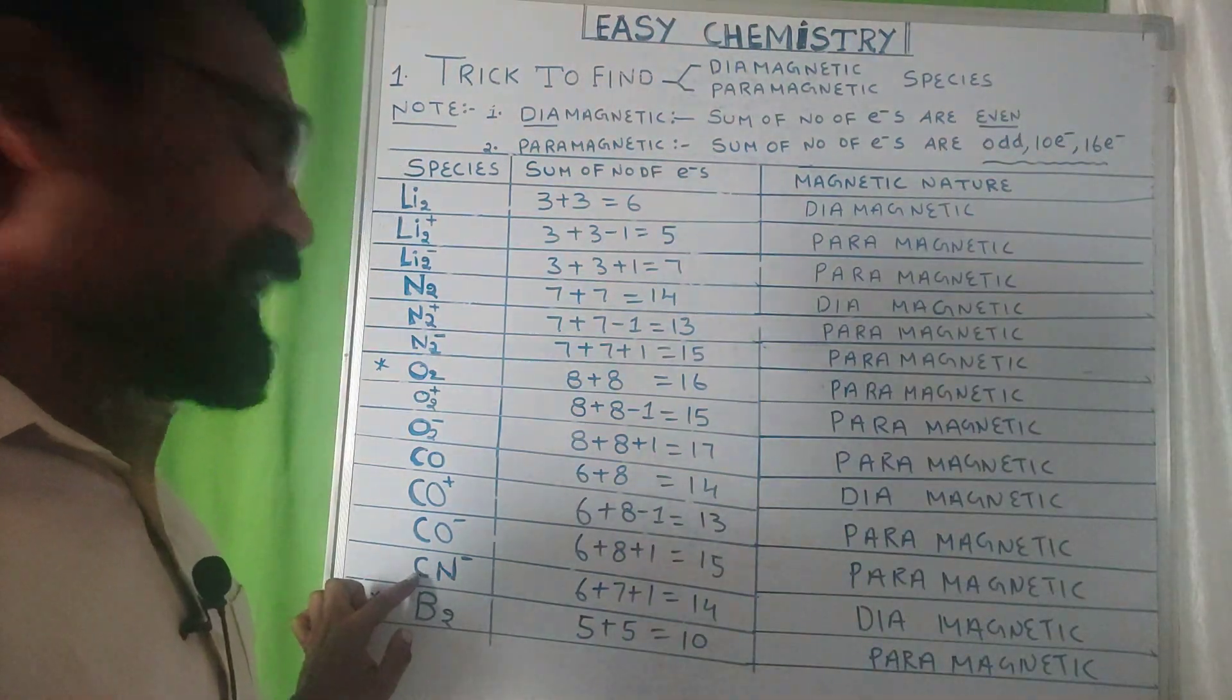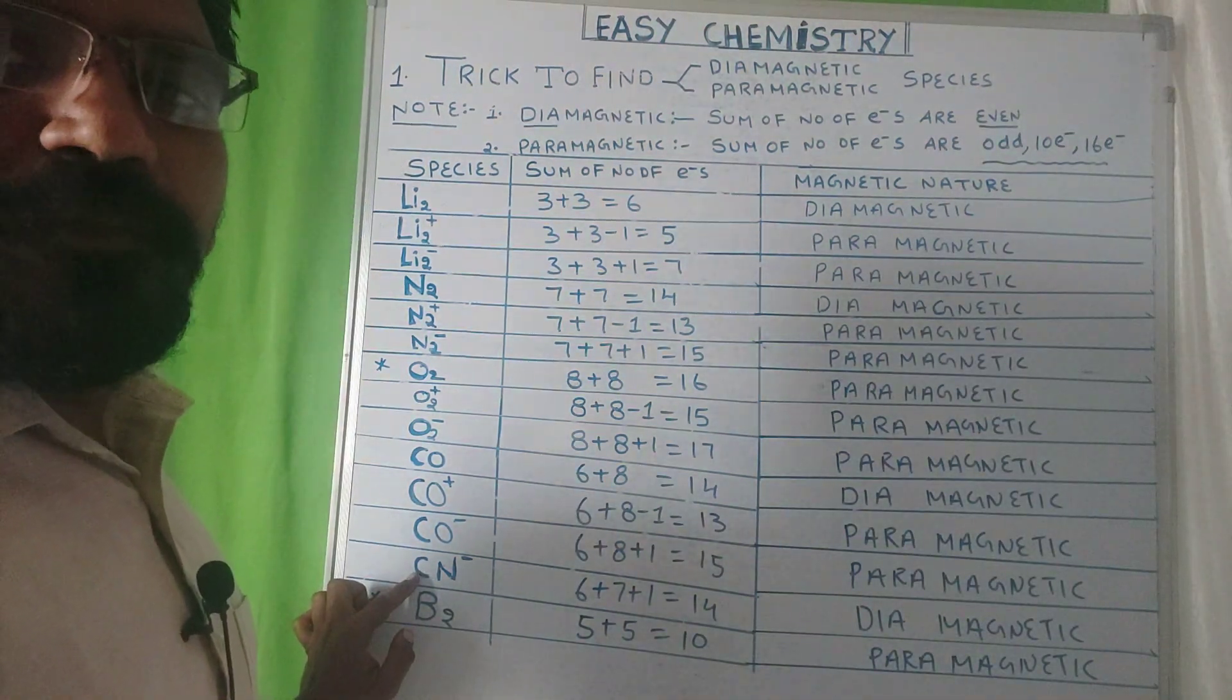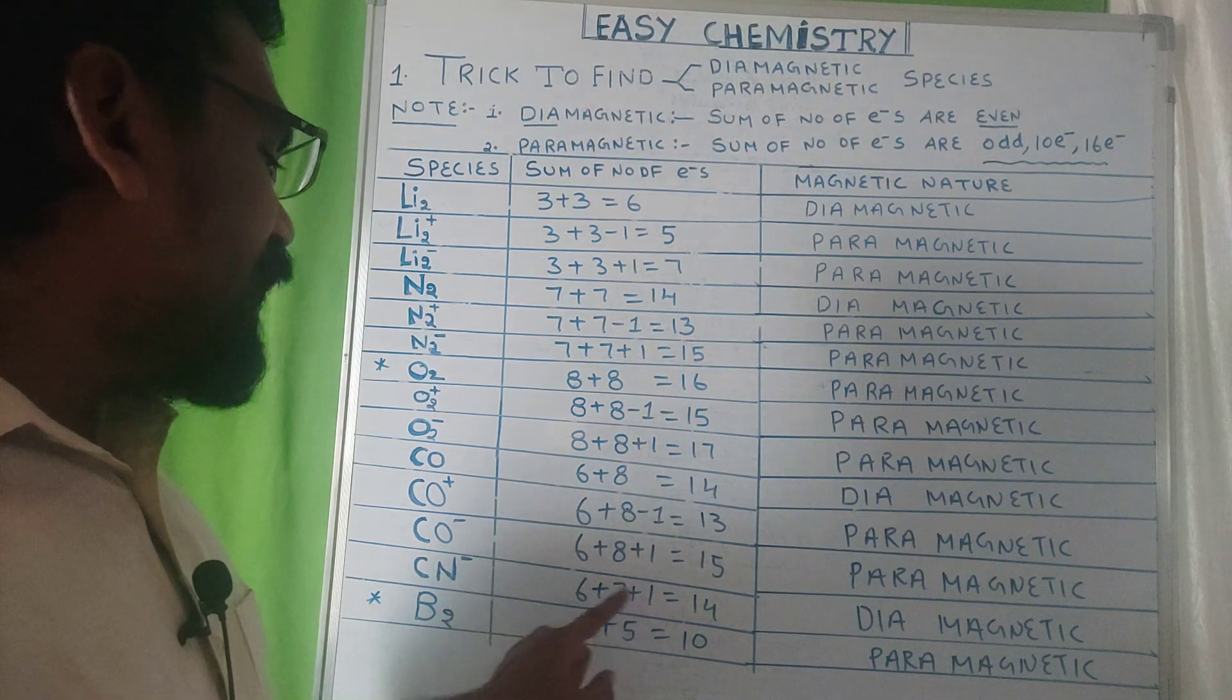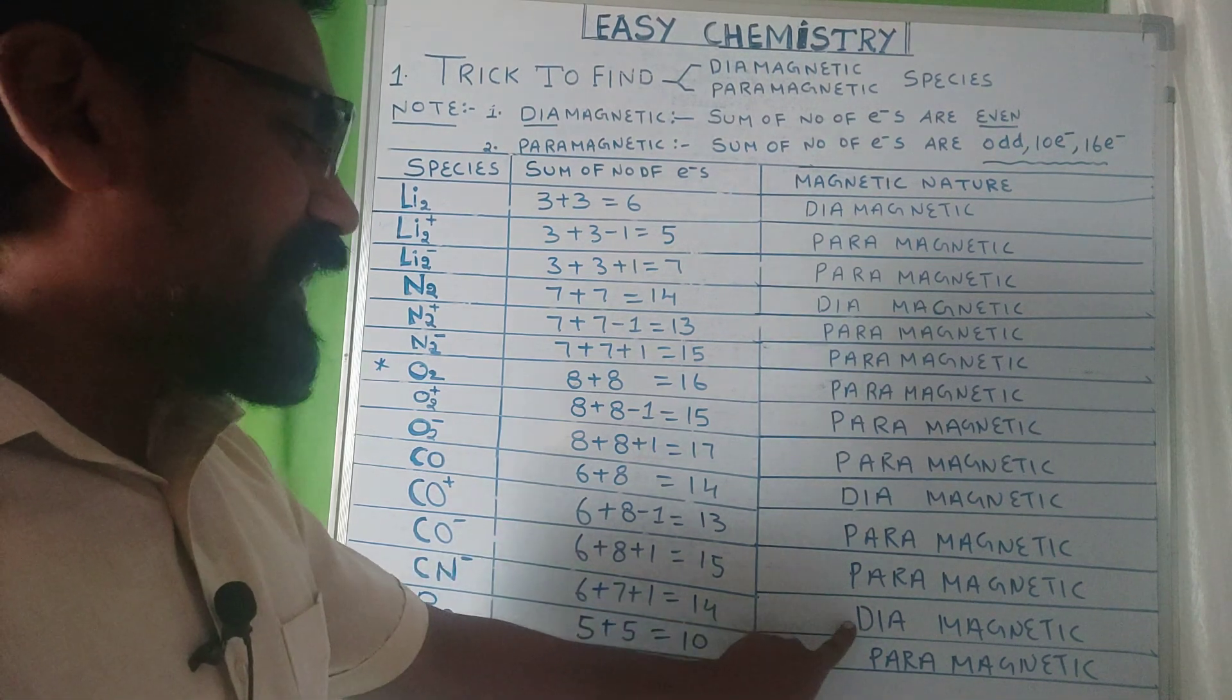If you see CN minus, carbon atomic number 6, nitrogen 7, plus 1 equals 14, diamagnetic nature.